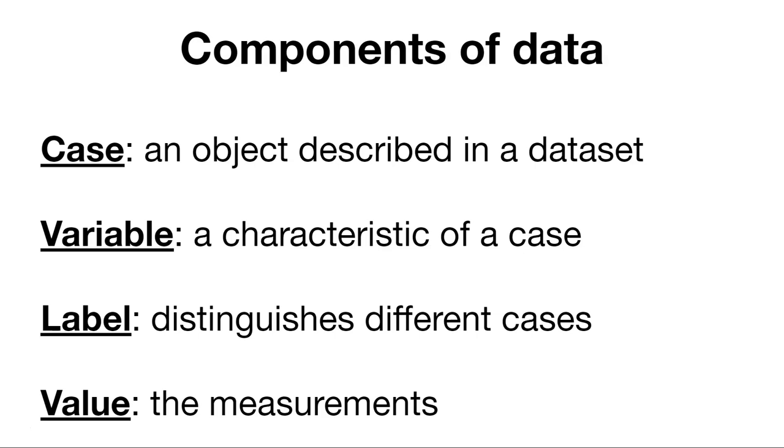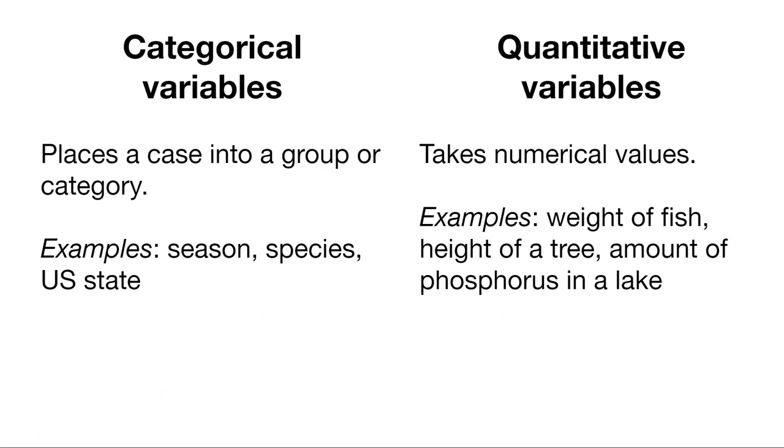What about the different components of data? We can start thinking about individual data points as different components. As an example, a case might be described as an object described in a dataset. A variable might be described as a characteristic of a case. So as an example, we might have a tree and maybe we collect some information about that tree, such as its species. Well, in this case, the variable might be species and the case might be something about that species. A label distinguishes different cases and then a value are the measurements. So what values might different species have in a dataset? These will be important definitions as we talk more about the components of data.